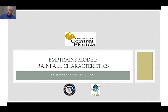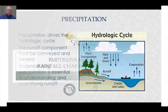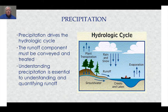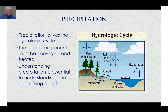If you're viewing this, you've asked for more information on rainfall characteristics used in the BMP Trains model. Precipitation is what drives the hydrologic cycle and what generates runoff. So to properly understand runoff, conveyance of runoff, and treatment of runoff, we need to understand precipitation as well.